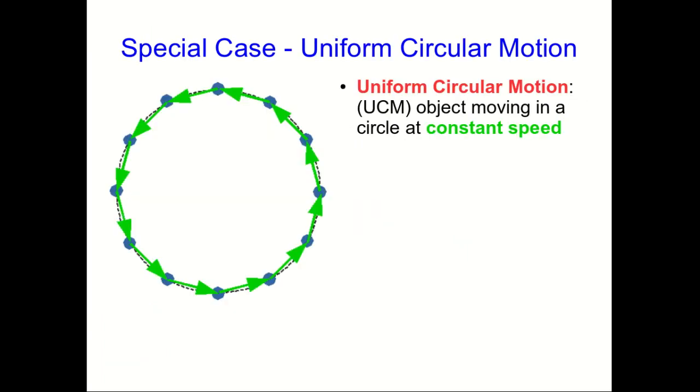Another case we'll look at in some detail is uniform circular motion. And what I mean by uniform circular motion is that we have an object that's moving in a circle, and it's moving with a constant speed.